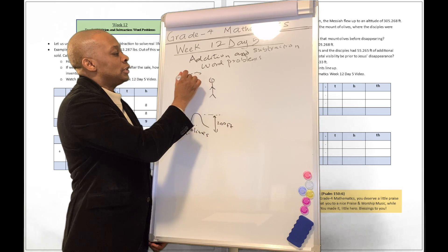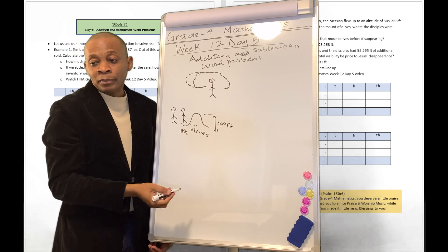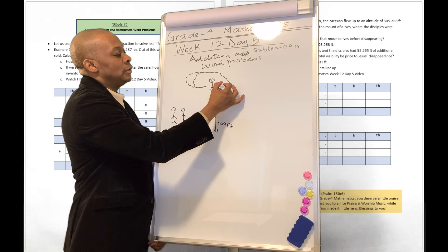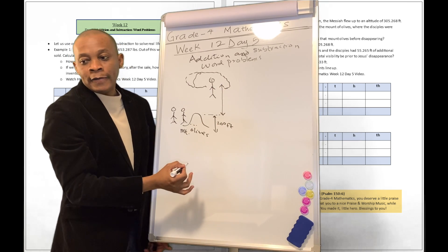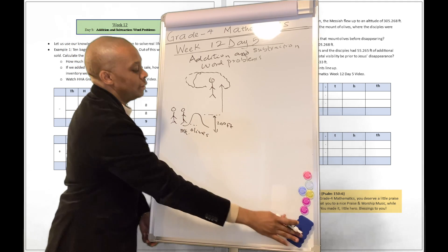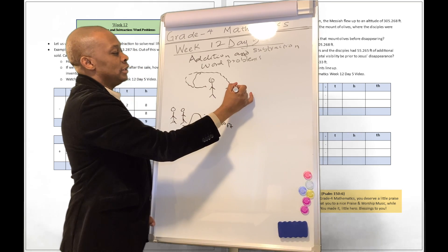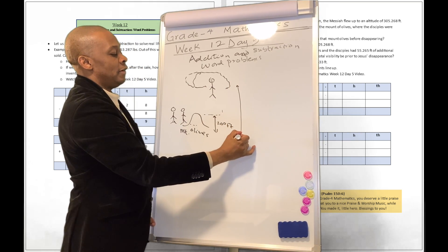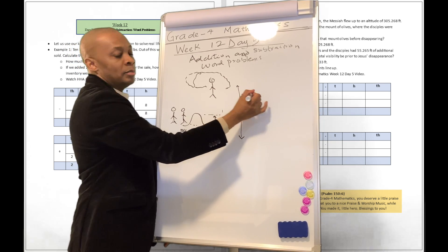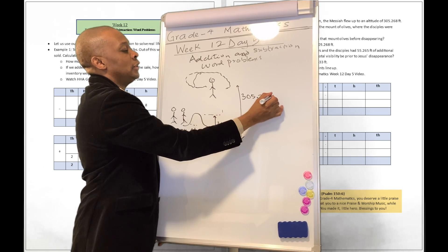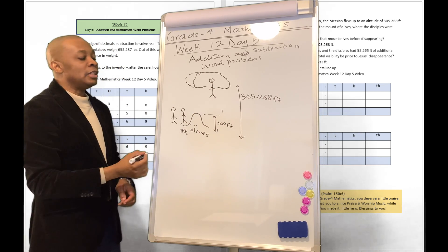And Jesus is going into the clouds. He's going to be going into the clouds right now. He's going to disappear. Well, before he disappears, he flies to an altitude that we can say it's about, let's say, from... Okay, let's do this. So the altitude from sea level is going to be approximately about 305.268 feet.